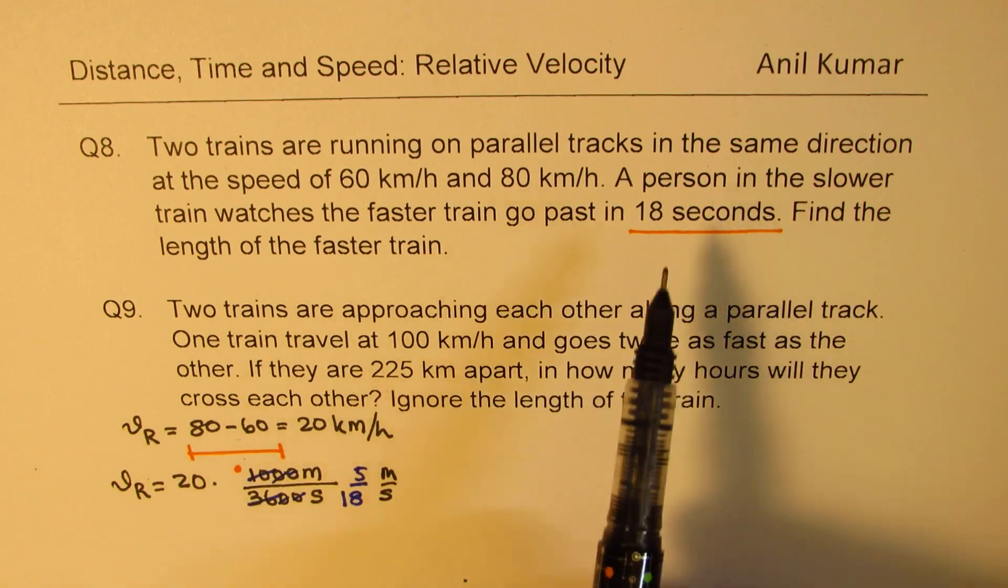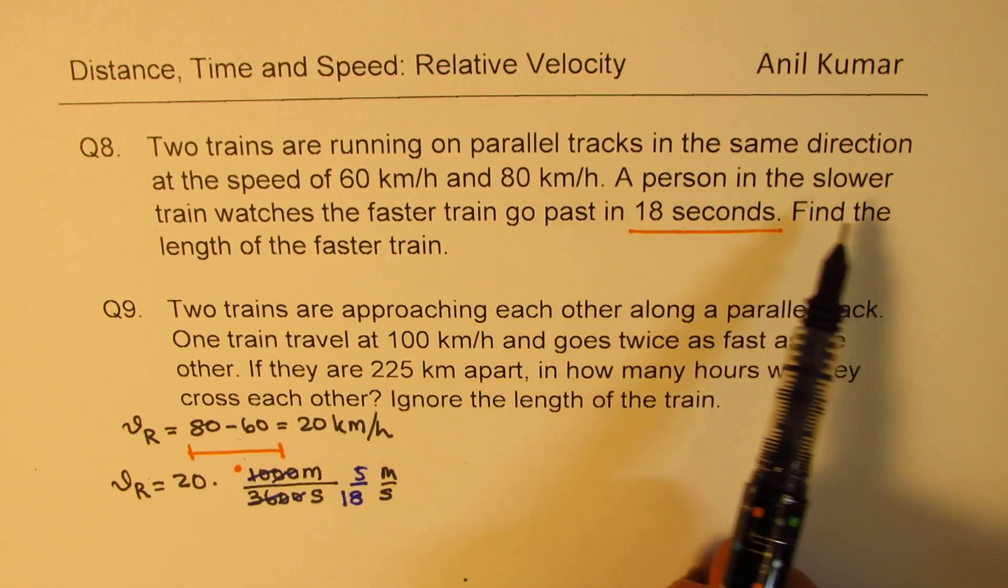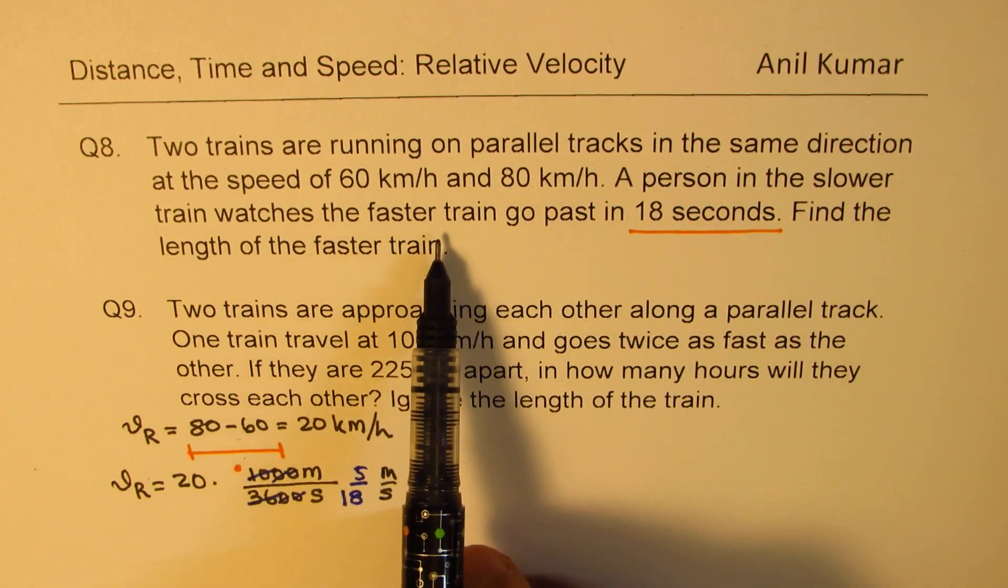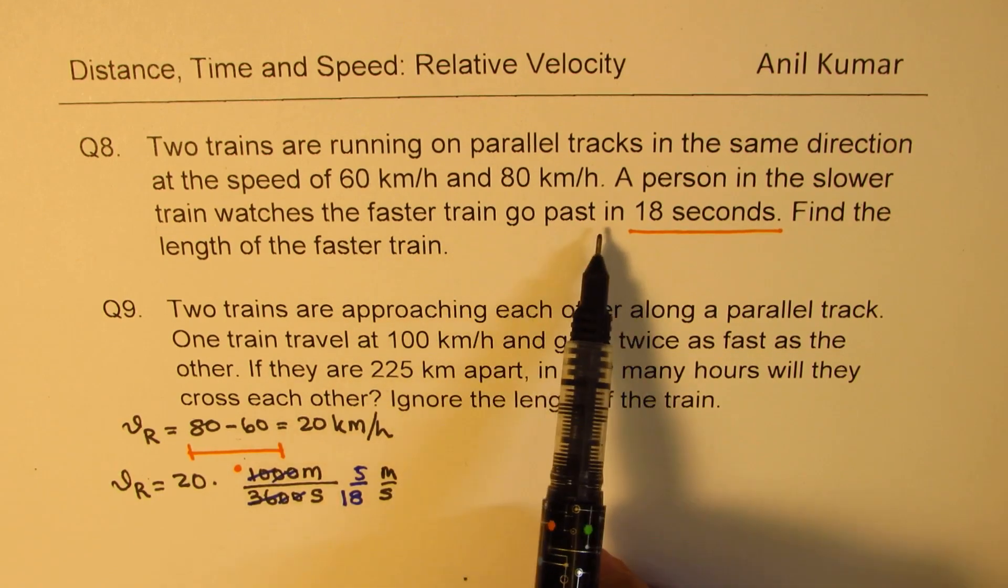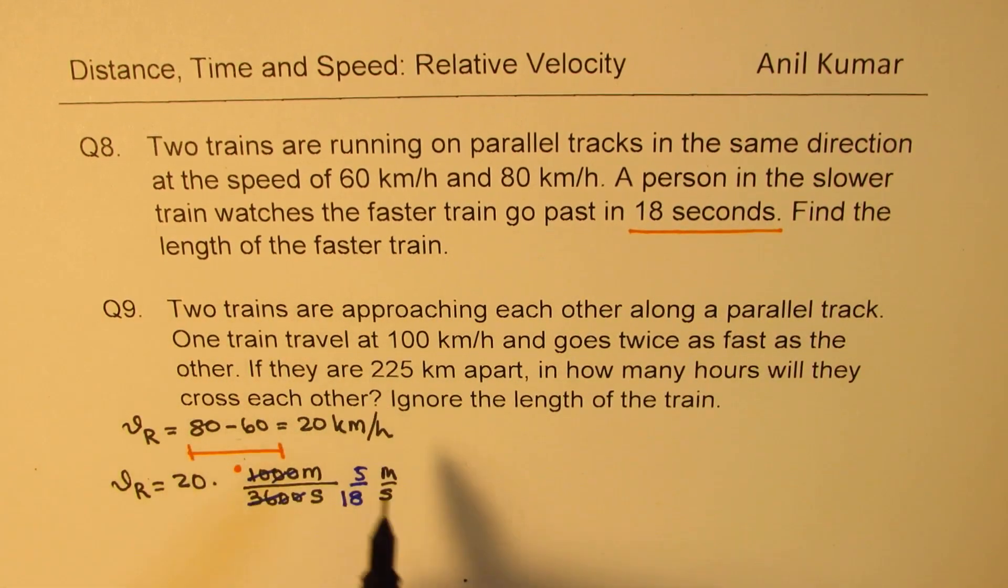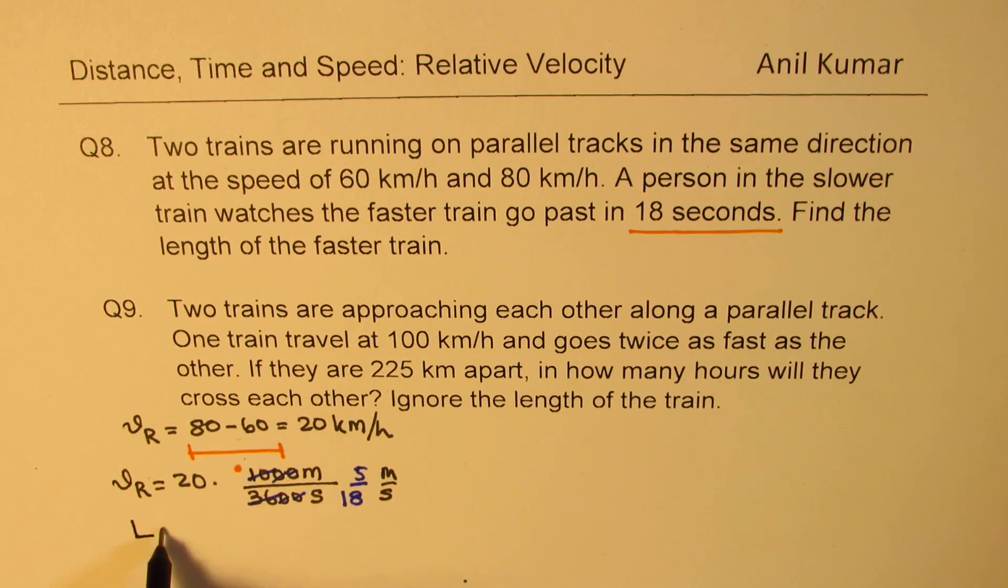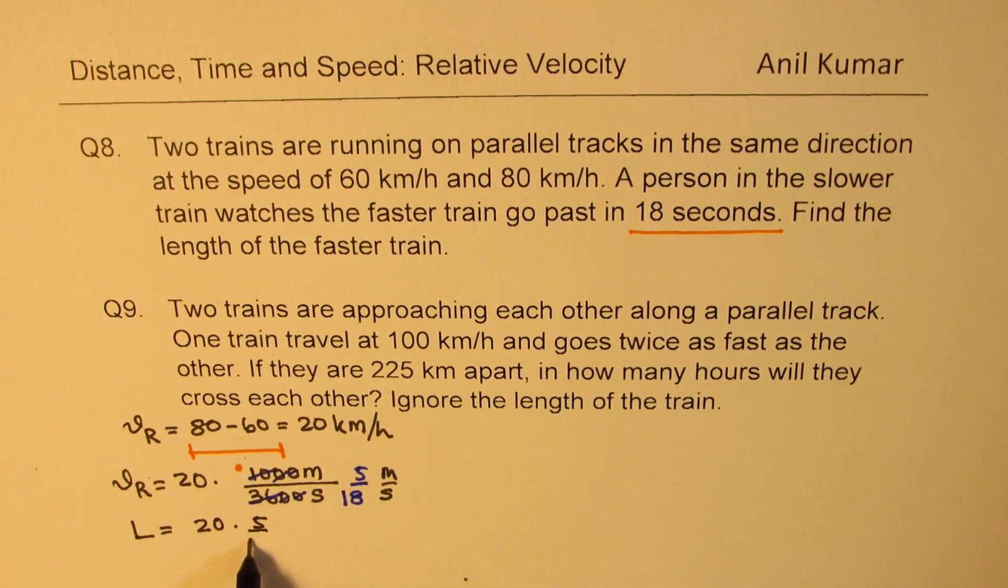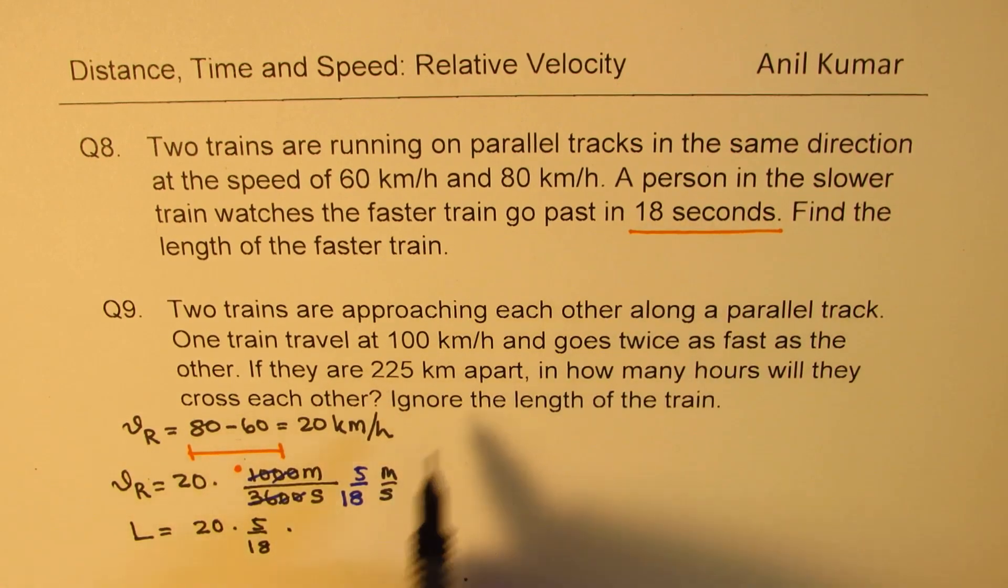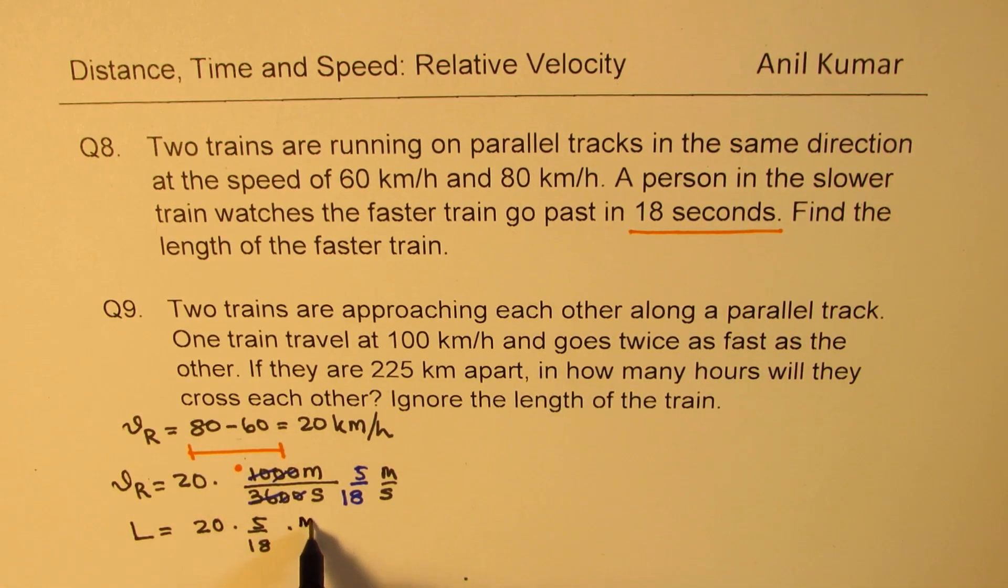A person in the slower train watches the faster train go past in 18 seconds. Find the length. Clearly, the length or the distance is time into velocity. So it is 20 times 5 over 18, which is the velocity times the time taken, which is 18 seconds. This is meters per second, and we'll multiply this by 18 seconds. So what you get is the length in meters.